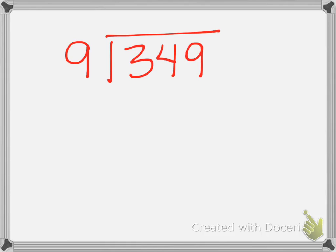My first example is going to be 349 divided by 9. And this is why this lesson is called 'place the first digit', so that you are putting the numbers in the correct place value. Now I know that 9 does not go into 3, so I now need to look at 34.